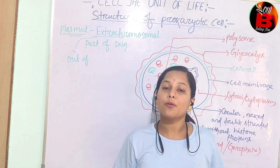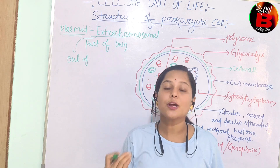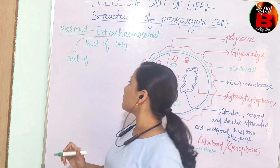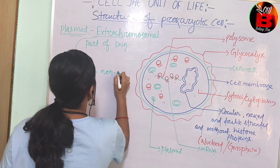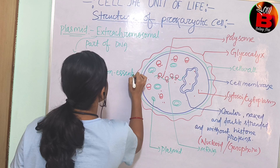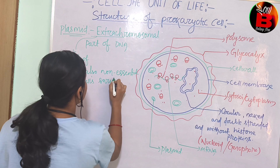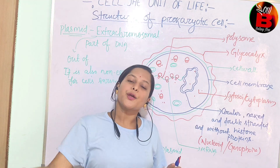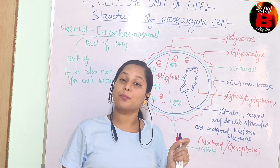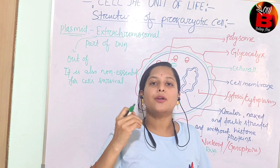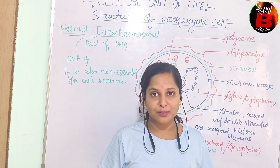The plasmid is the extra-chromosomal part of the DNA. Extra-chromosomal means out of the original genomic DNA — the extra DNA which is present in the prokaryotic cell is known as the plasmid. It is non-essential for cell survival. When you remove the extra part of the DNA from the bacterial cell, the bacteria will still survive. That's why it is called the non-essential part of the cell.